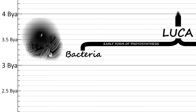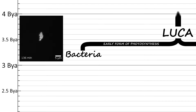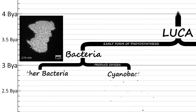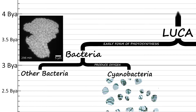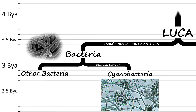Bacteria developed an early form of photosynthesis to produce their own energy, but this early form of photosynthesis did not yet produce oxygen as a byproduct. It would not be until the later evolution of cyanobacteria around 3,000 million years ago that photosynthesis started producing oxygen.